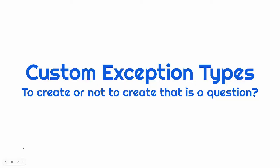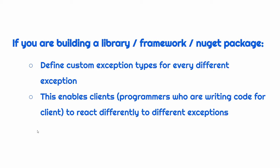Before jumping to the code, let us discuss a few important points. While working with custom exception classes, there is a lot of confusion around it. You might also have the question in your mind: should you create a custom exception class for every validation rule, or should you create only one? The thumb rule is, if you are building a library, framework, or NuGet package that will be used by other developers in their application development, then you should always define individual custom exception classes for every different exception that you are throwing from the library. This enables the client code to react differently to different types of exceptions as per its requirement.